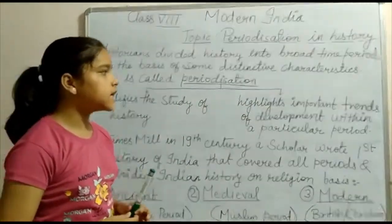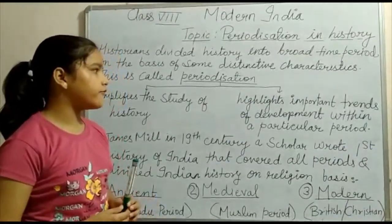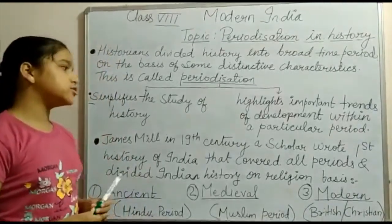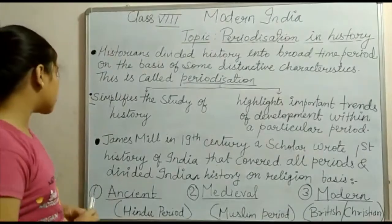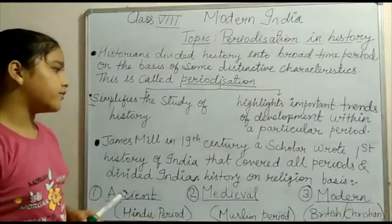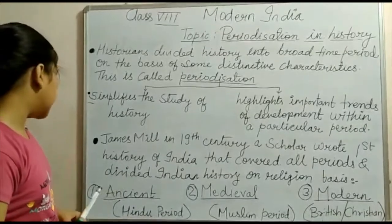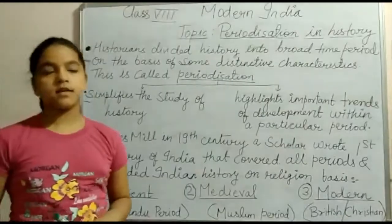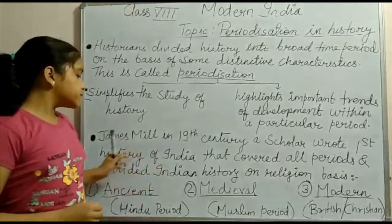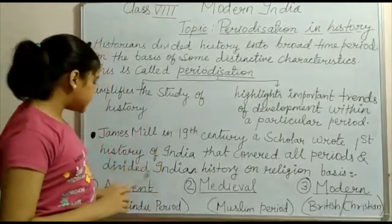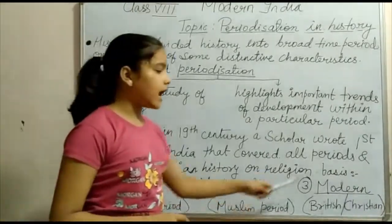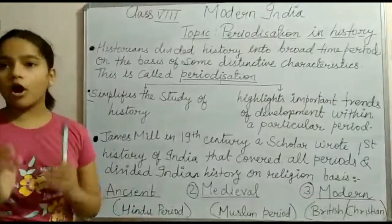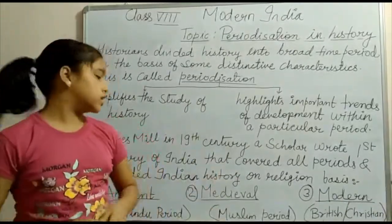James Mill, in the 19th century, a scholar, wrote the first history of India that covered all periods and divided Indian history on a religion basis. James Mill divided history into three periods: ancient period, medieval period, and modern period. The ancient period came to be known as the Hindu period because India was mostly under Hindu rulers.